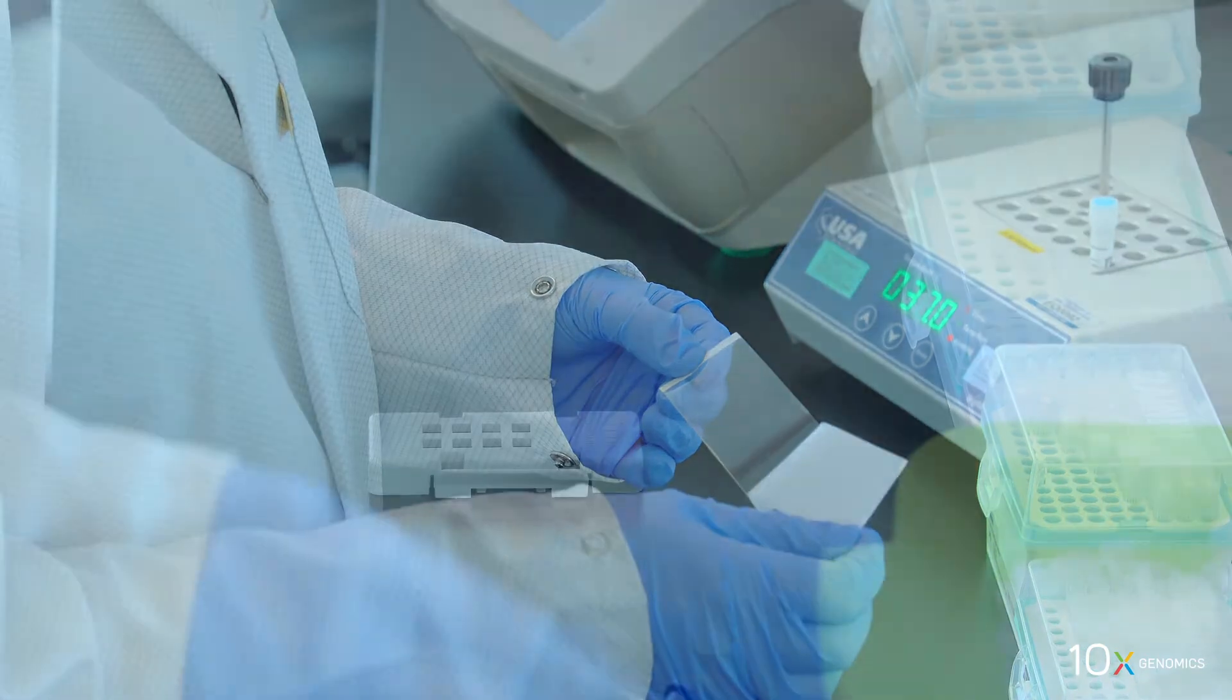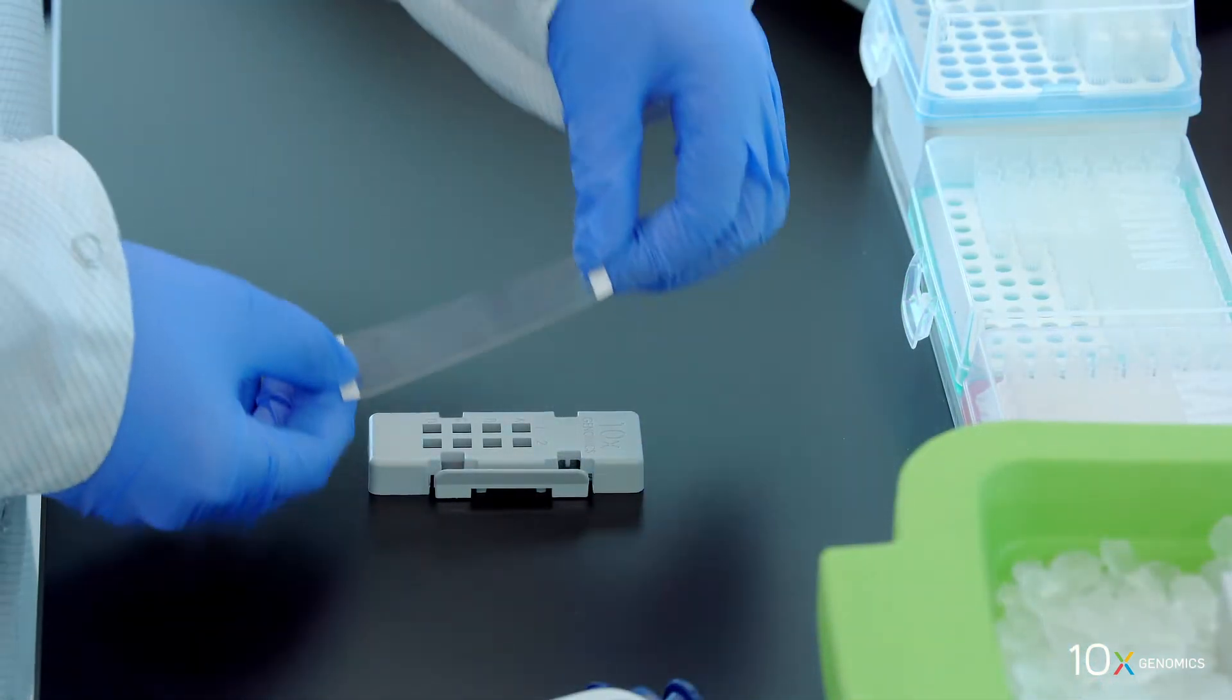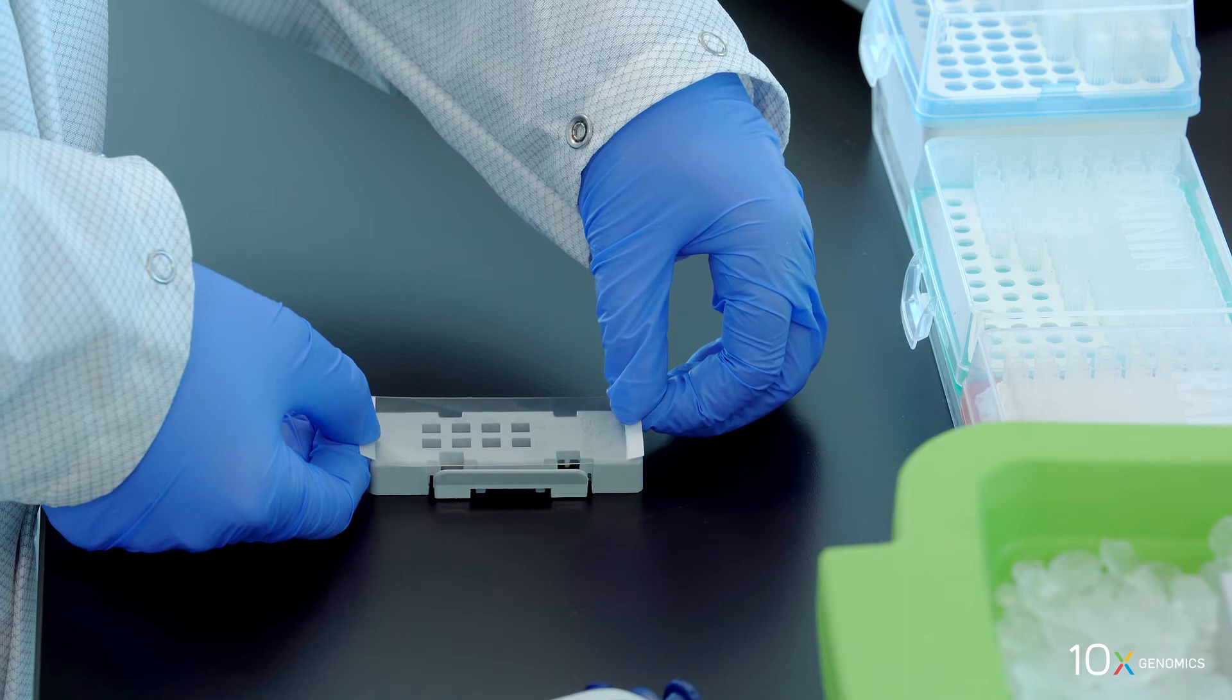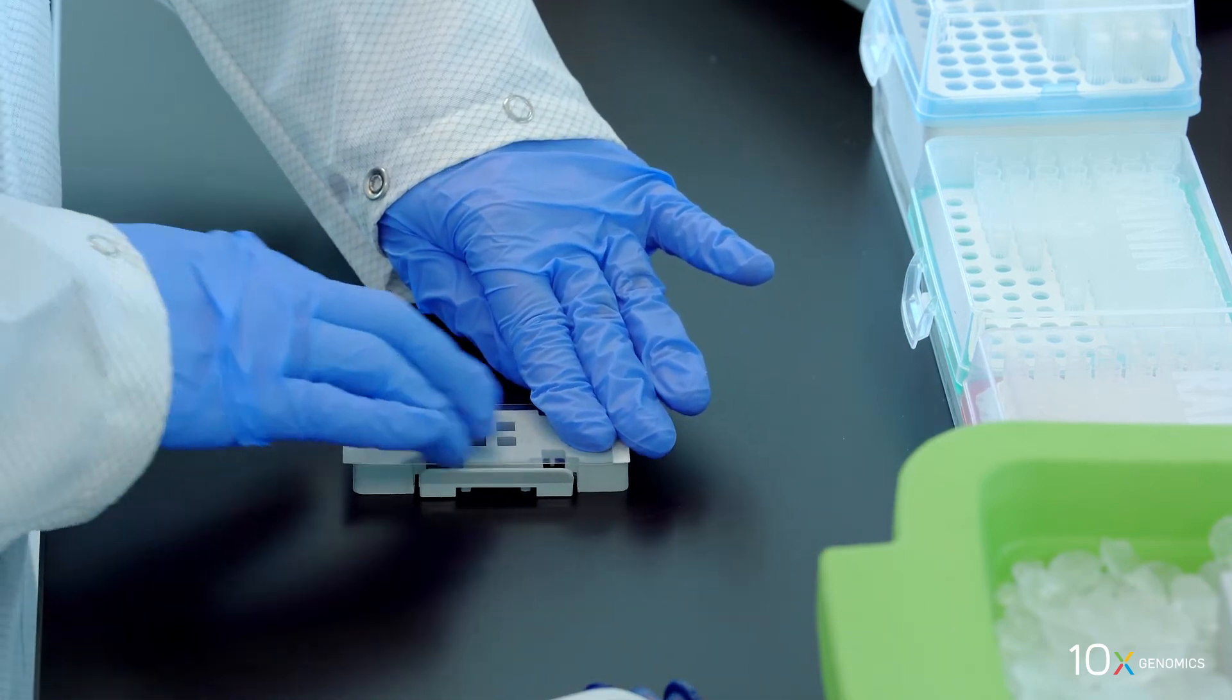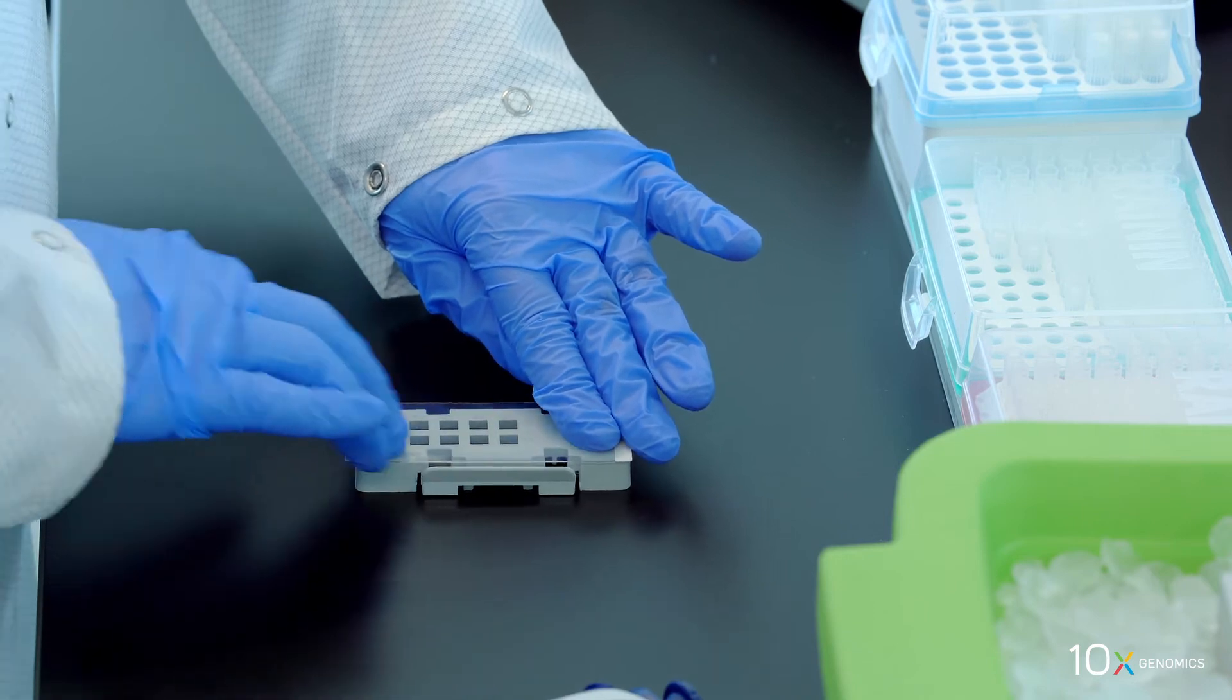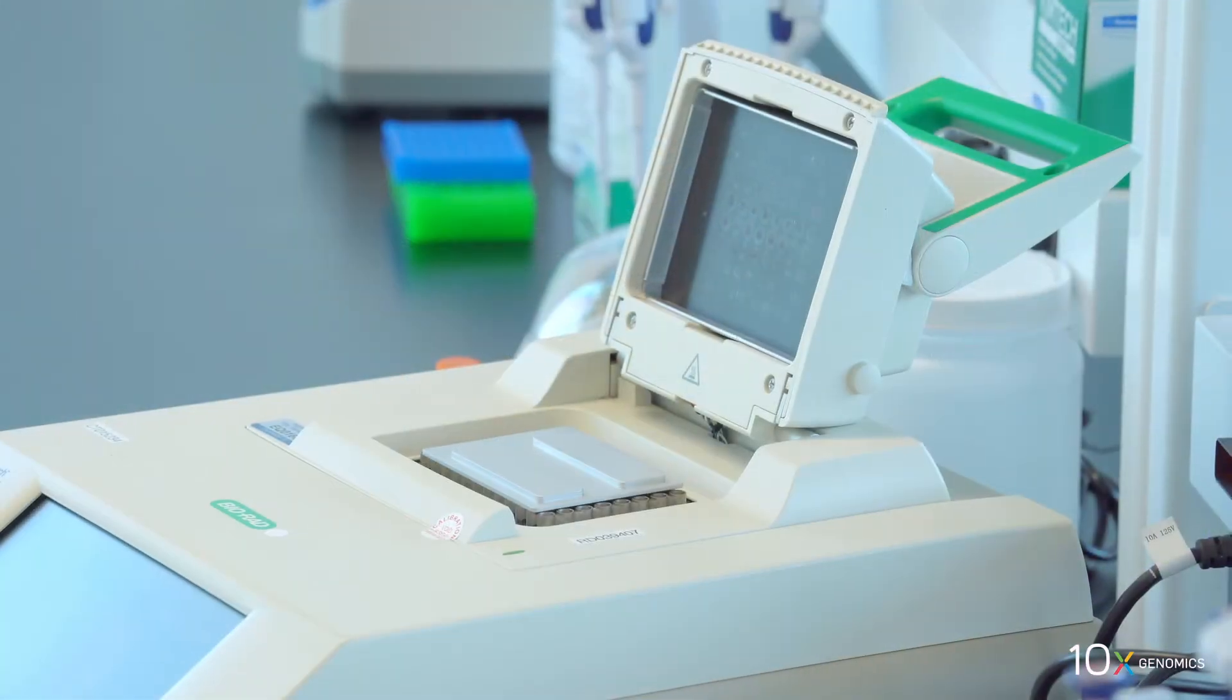Align the slide seal with the surface of the slide cassette and apply while firmly holding the slide cassette with one hand. Press on the slide seal to ensure uniform adhesion. Place the slide cassette on the thermocycler adapter at 37 degrees Celsius.